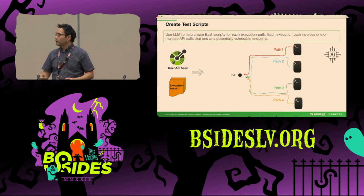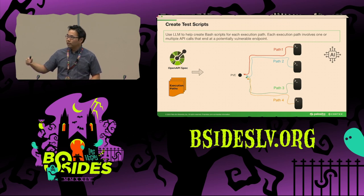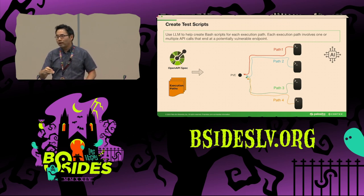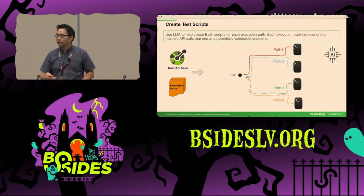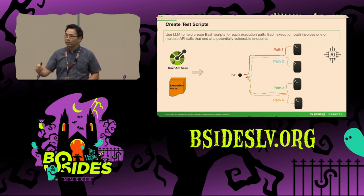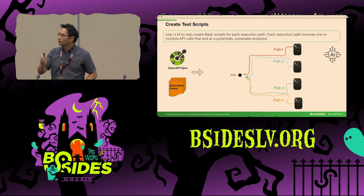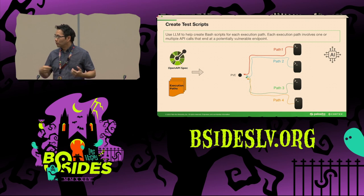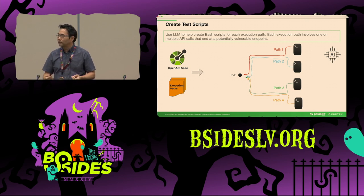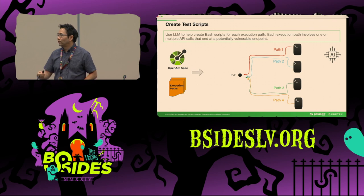In the last stage, we turn each execution path into an executable bash script and run it to actually send API requests to the target endpoint. The process is more complicated than just generating and running the script, as will be expanded in the next few stages.